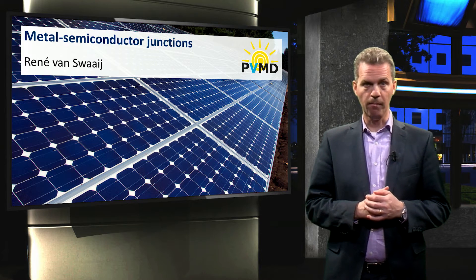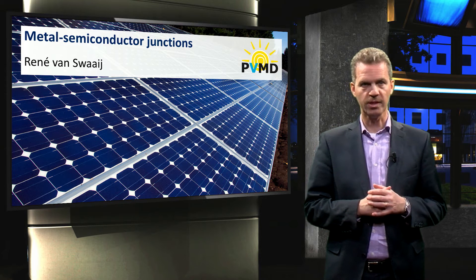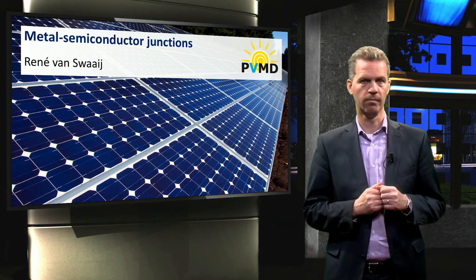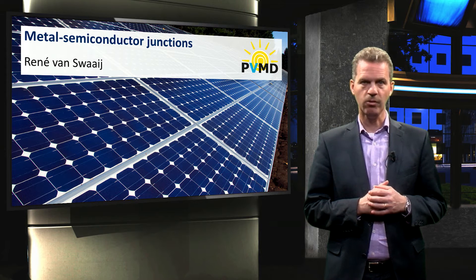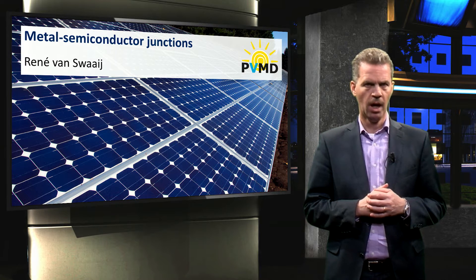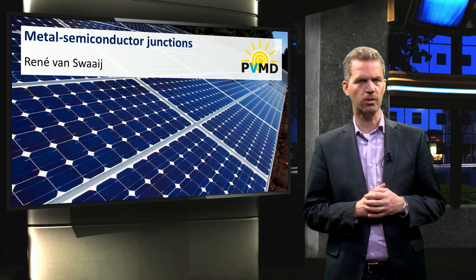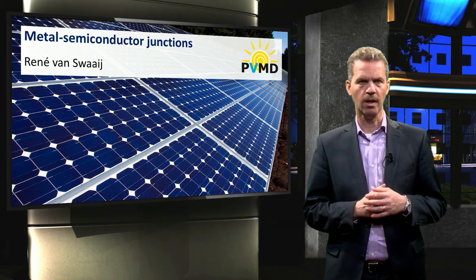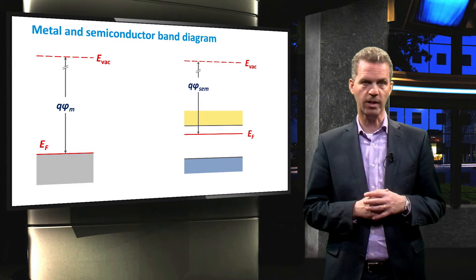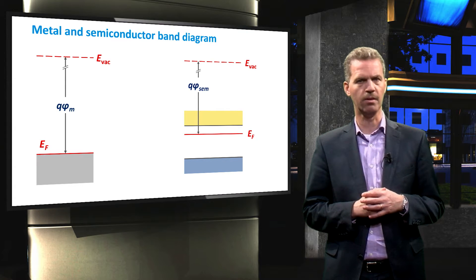Now that we have explored some important properties of metals and semiconductors, we can finally understand what happens when we bring a metal and semiconductor together. In this video we will look into deep detail at the metal-semiconductor junction. In the previous video we already discussed the need for metals to collect the photogenerated current in the solar cell, and I introduced the work function, defined as the energy difference between the vacuum level and the Fermi level of a given material.